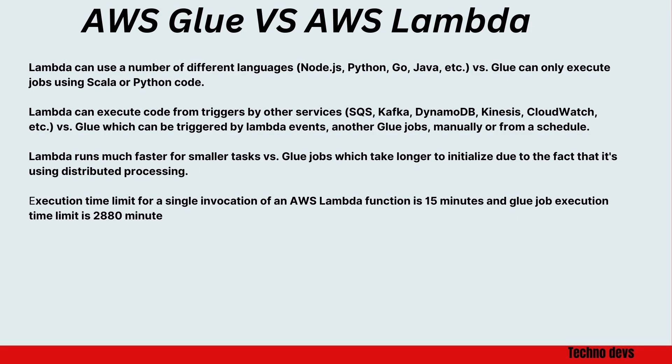The execution time limit for a single invocation of an AWS Lambda function is 15 minutes, whereas the Glue job execution time limit is 2880 minutes.